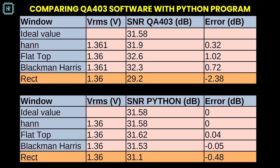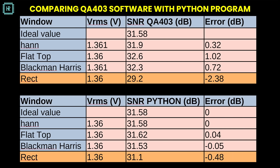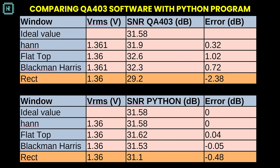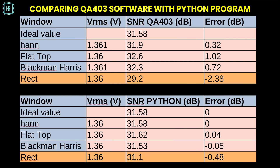Explaining the signal processing for this Python program is too much for this video — that would be a whole video in itself. If you're interested, leave a comment saying 'show me the SNR algorithm'; if I receive more than 50 comments within 2 weeks, I'll make that video. Here you see the results of the QA403 software versus my own Python SNR program. The results using the Python SNR program are very accurate with a maximum error of just 0.05 dB. I used the same time signal for all four results and verified with multiple time signals.